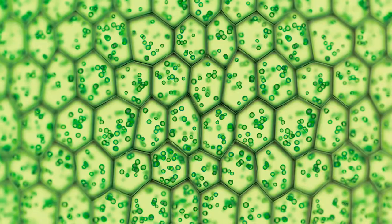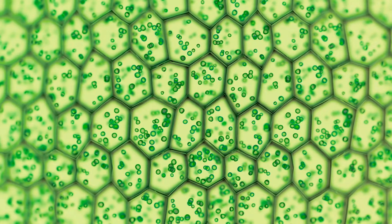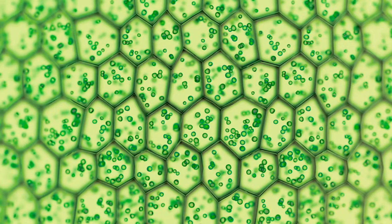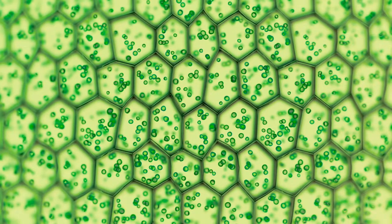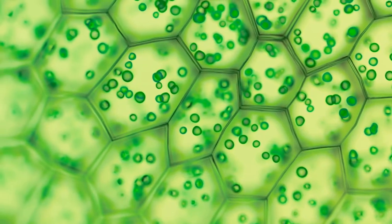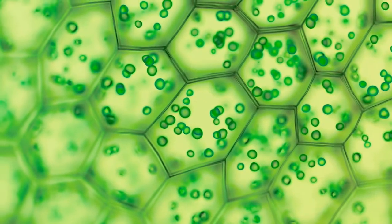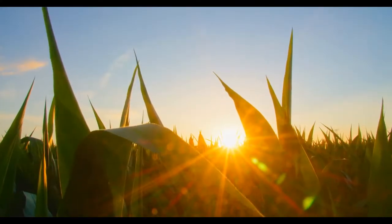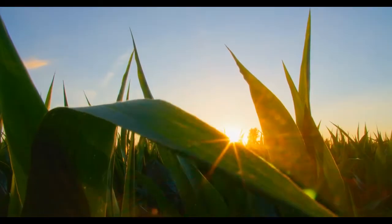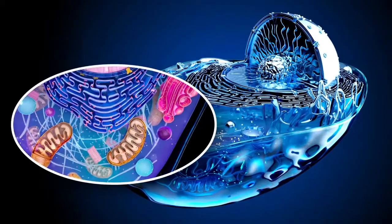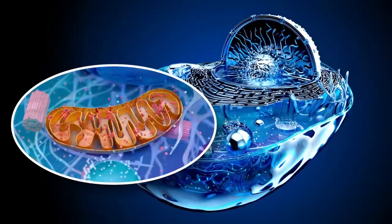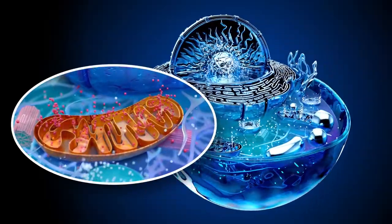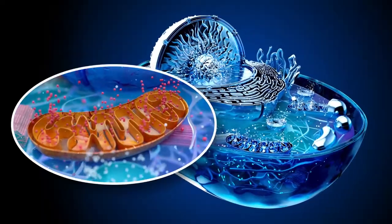Plant cells have an extra layer of protection called the cell wall, which not only provides protection but also contributes structural strength to the plant. In addition to the cell wall, plant cells have chloroplasts, which create the chemicals responsible for the plant's color and convert water, sunlight, and carbon dioxide into sugar. Lastly, the mitochondria is found inside all cells and uses sugar to produce energy that is used by all other organelles.